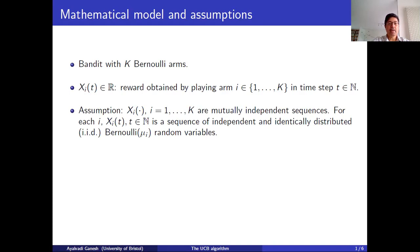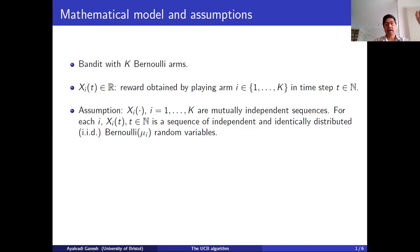We are going to make the following assumption through the next few lectures. We are going to assume that the rewards are mutually independent across arms. So if you look at the sequence x_i for different i, these are independent sequences. Moreover, for each fixed arm i, the sequence x_i(t) is of independent and identically distributed random variables. So we have independence both across time and across arms.